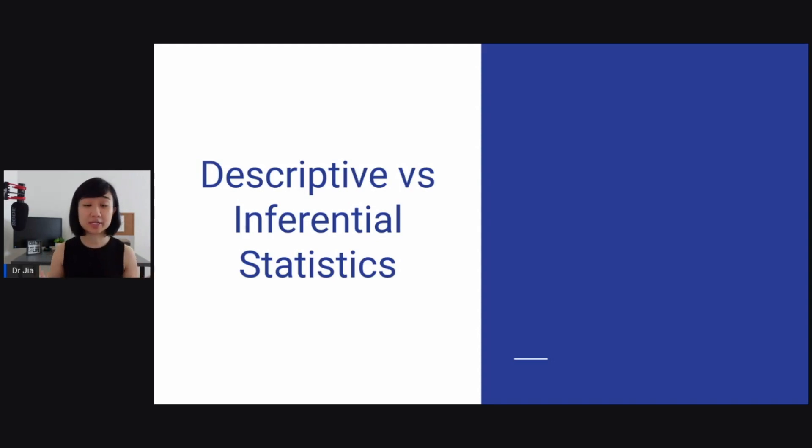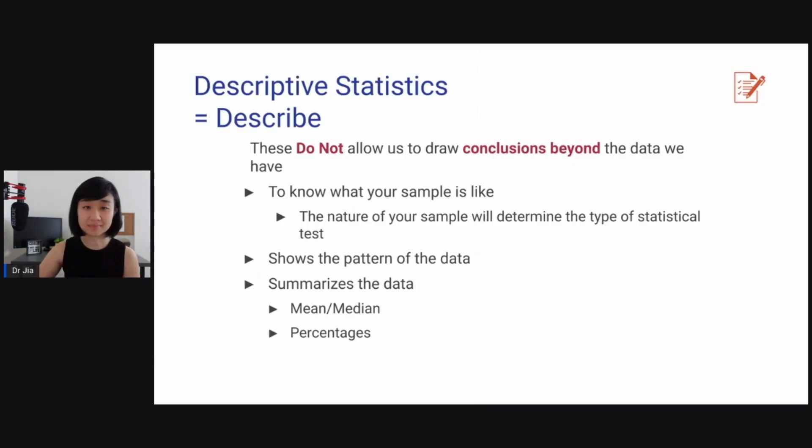In this lesson, we will be talking about the differences between descriptive and inferential statistics. What is descriptive statistics? Basically, you are describing something and descriptive statistics do not allow us to draw conclusions beyond the data we have. What it's used for is to know what your sample is like because the nature of your sample would determine the type of statistical test. The second purpose of this is to show the pattern of the data. And the third is to summarize the data, for example, mean, median, and percentages.